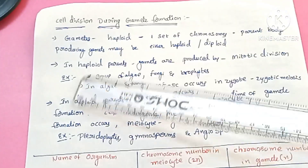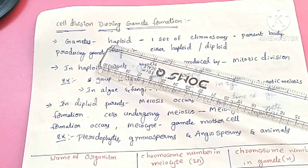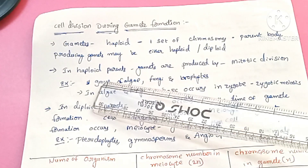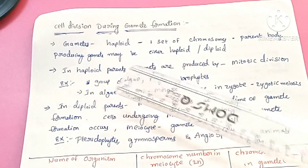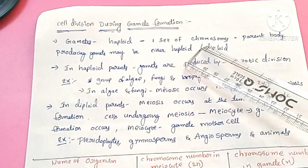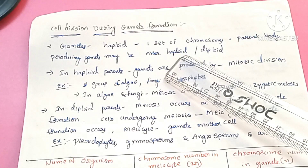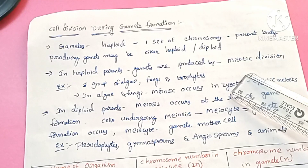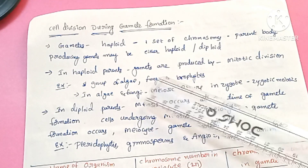Now let's see about cell division during gamete formation. Gamete formation is very important. Gametes are in a haploid condition — they consist of only one set of chromosomes. If there are haploid parents, the gametes are produced by mitotic division, and these gametes also have one set of chromosomes.